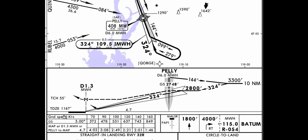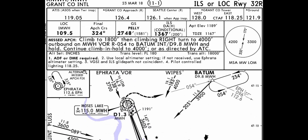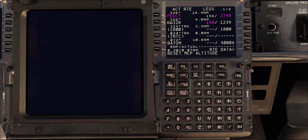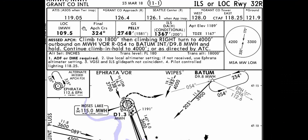In the approach chart: we have Peli, then the runway, and for the missed approach — 1800, right turn to 4000, to bottom hold. So: Peli, runway, 1800, go to bottom 4000, and hold over bottom. Confirm and then execute. Ready for the briefing? Moses Lake, Washington — ILS or localizer runway 32 right, chart 11-1, 23 March 2018. Checked.